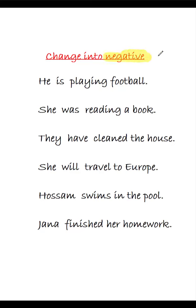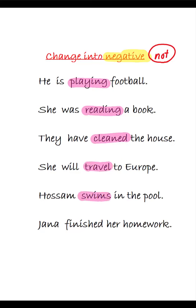To change a sentence into negative, negative means to add 'not' to the sentence — but where exactly in the sentence can I add 'not'? First, you need to find the verb in the sentence. Like here: 'playing,' here: 'reading,' here: 'cleaned,' 'travel,' 'swims,' 'finished.' Then you look before the verb. If you find a helping verb like 'is,' 'was,' 'have,' 'will' — these are helping verbs.